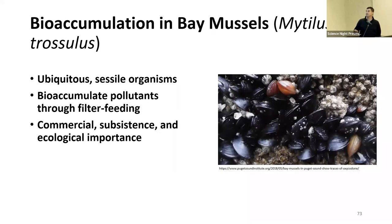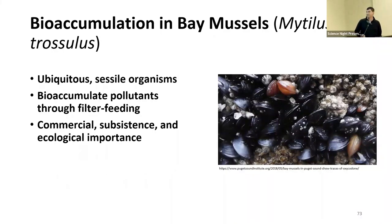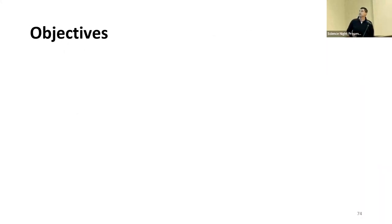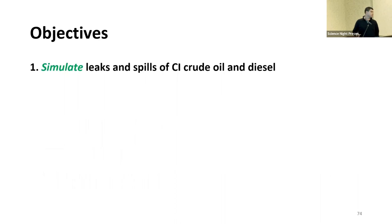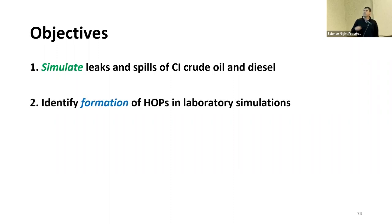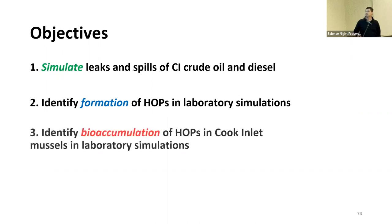For our bioaccumulation studies, we tested bay mussels — they're ubiquitous, stay in one place, accumulate pollutants because they filter feed, and are of commercial interest because we eat them. The study objectives were: first, simulate a spill in a laboratory microcosm to control as many variables as possible; second, identify the formation of hydrocarbon oxidation products in those simulations; and third, look at bioaccumulation in these mussels.